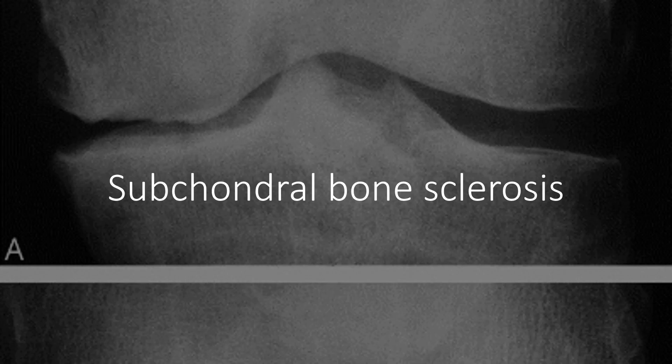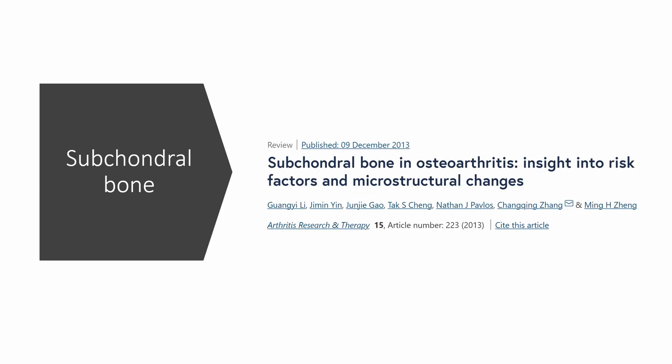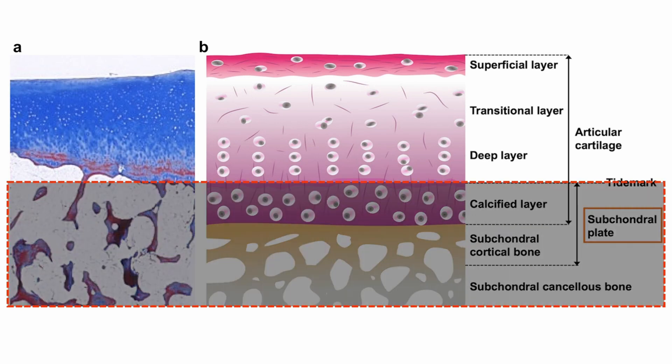This phenomenon relates to an increased radiopacity found just beneath the cartilage layer, a subject discussed in part 4 of this series. If you missed part 4, revisit that section for better clarity. The subchondral bone includes two components: the subchondral cortical bone plate and the neighboring subchondral cancellous bone.